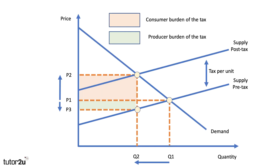A quick reminder of how a specific tax impacts on a market. The tax per unit is shown by the vertical distance between the two supply curves, pre and post-tax. The price as a result of the tax goes up from P1 to P2. In this situation the supplier is able to pass on most of the burden of the tax to the consumer, but they have to absorb a little bit — the gap between P1 and P3. P2 to P3 is the total tax per unit, so the government's guaranteed that; the question is who pays it.